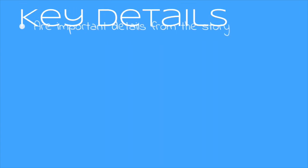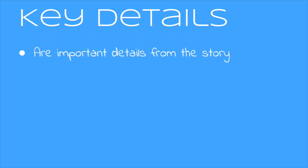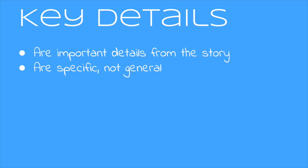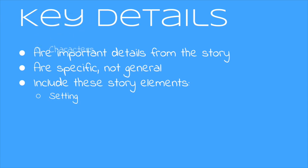Key details are important details from the story. They are also specific, not general, since that's the definition of details. And they include these story elements: setting, characters, and events. It's okay if you don't know what these mean — we're about to talk about them. Let's take a look.